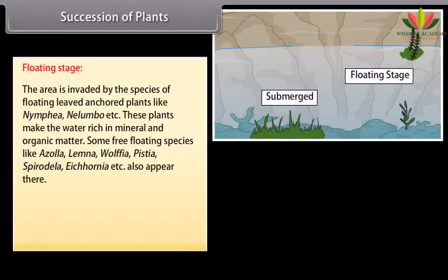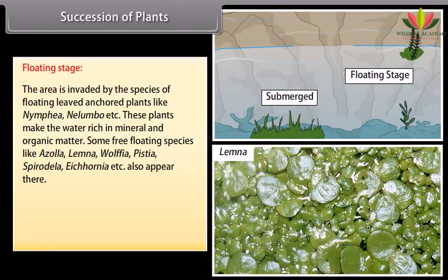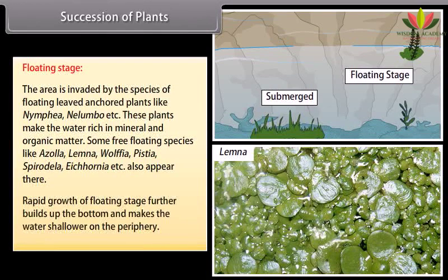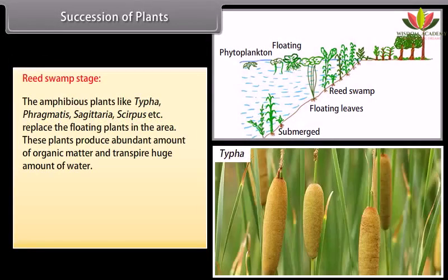Floating stage: the area is invaded by floating-leaved anchored plants like Nymphia, Nelumbo, etc. These plants make the water rich in mineral and organic matter. Some free-floating species like Azolla, Lemna, Wolffia, Pistia, Spirodela, Eichhornia, etc. also appear. Rapid growth of floating stage further builds up the bottom and makes the water shallower on the periphery. Reed swamp stage: amphibious plants like Typha begin to replace the floating plants.